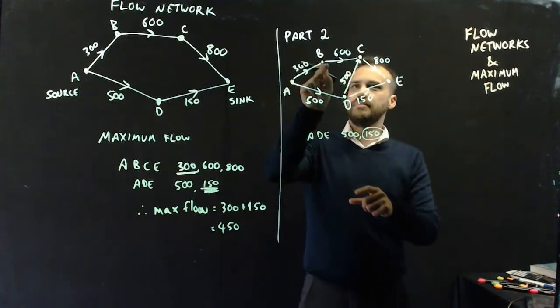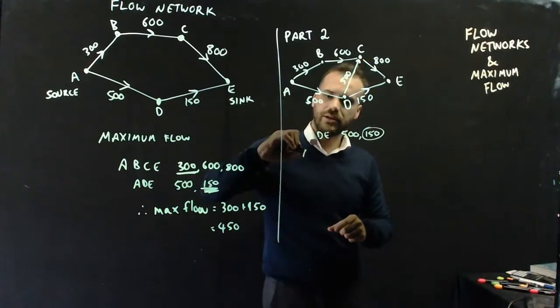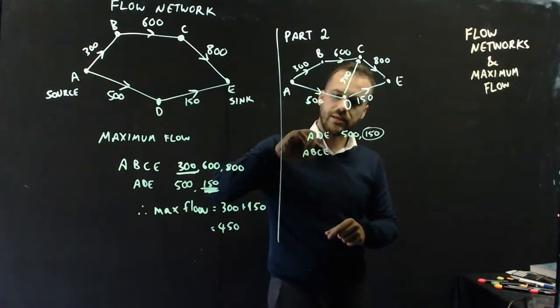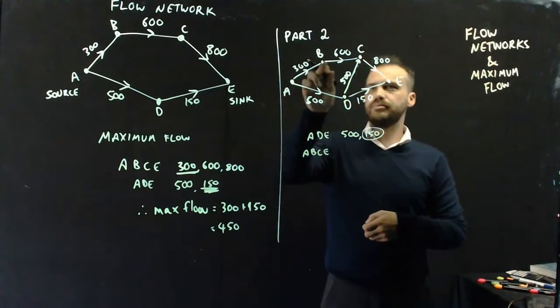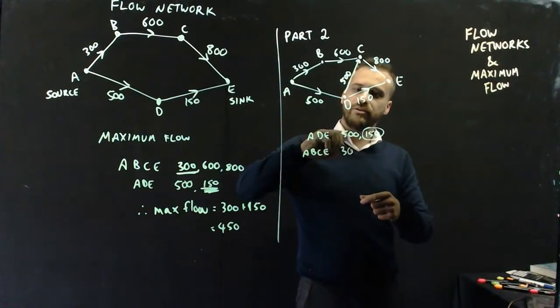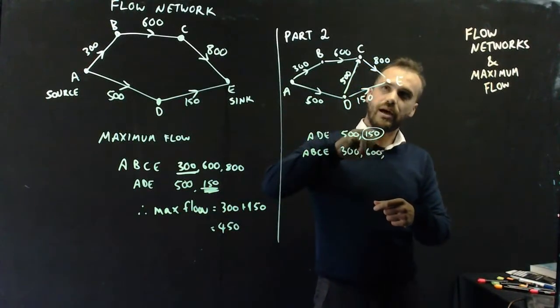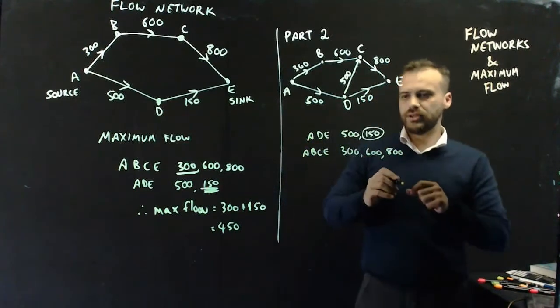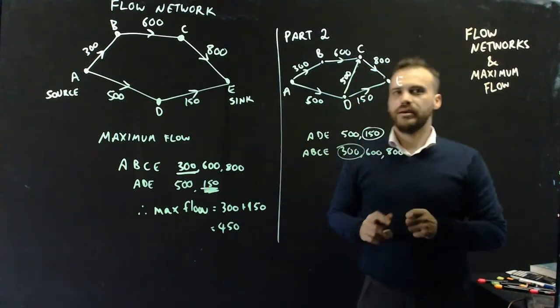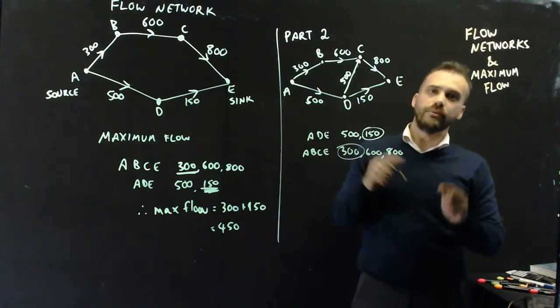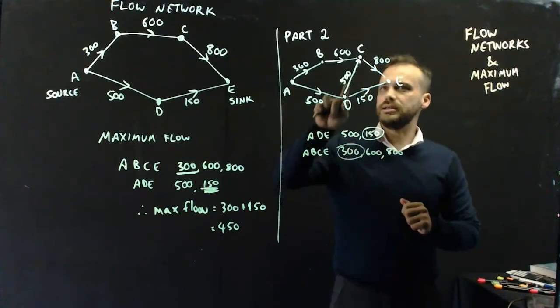Just like before, it can go A, B, C, E. If it goes A, B, C, E, it's 300, 600, 800, and the bottleneck there is the 300. But water can go one more way: A, D, C, E.